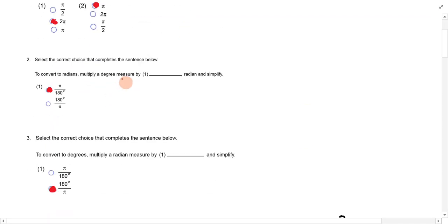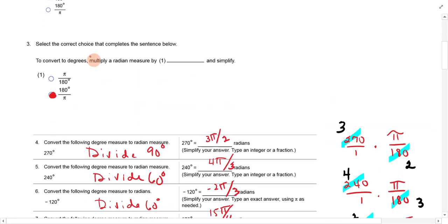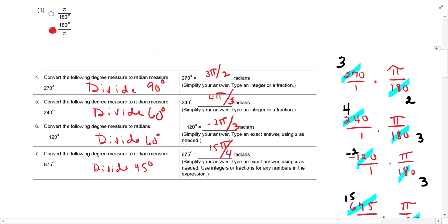To convert to radians, multiply a degree measure by pi over 180. To convert to degrees, multiply a radian measure by 180 over pi. So it's the opposite. And then we're just going to practice doing it. You could look at your chart for 270. But I did these over here so you see what's going on. Take the degree measure and multiply by pi over 180, which means you're going to do some canceling out. 90 goes into both of these. Goes in 3 there, goes in 2 there. So 3 pi over 2.